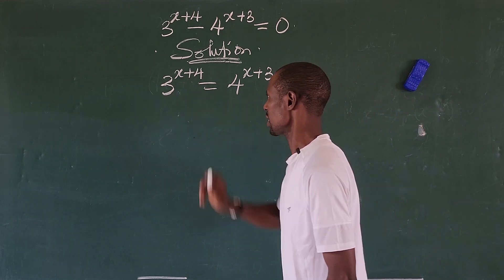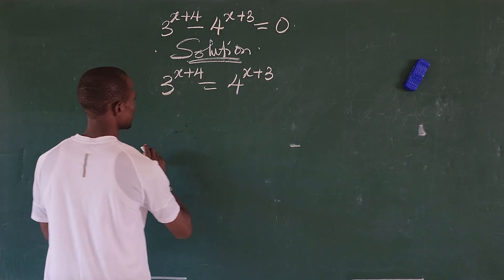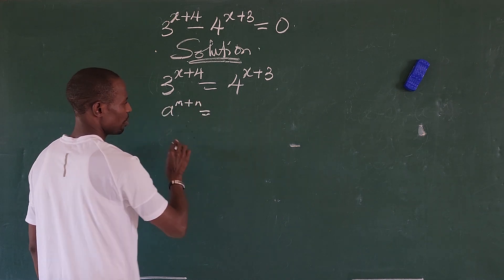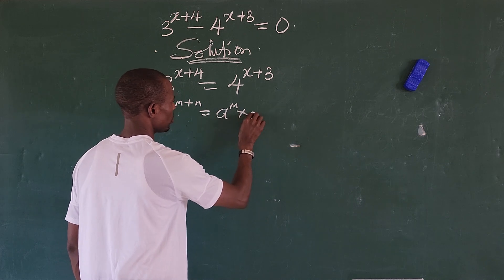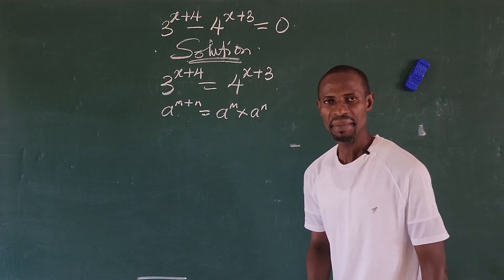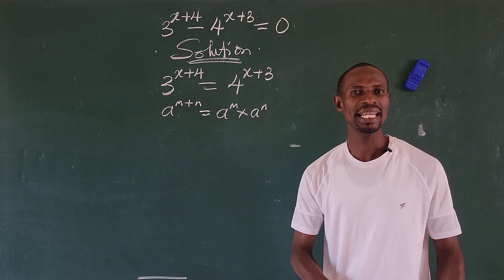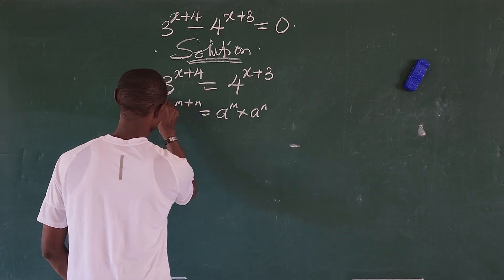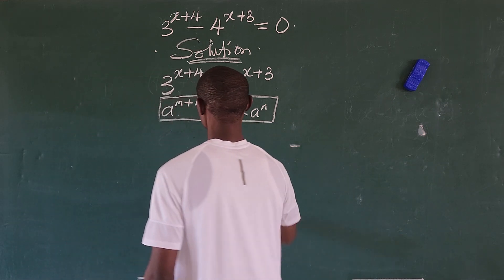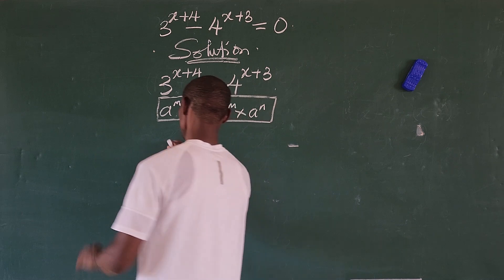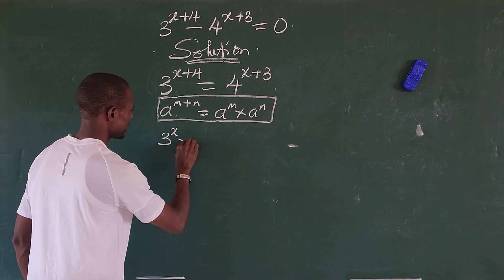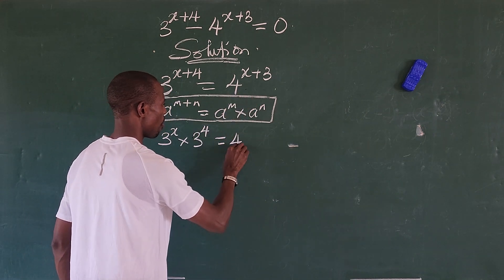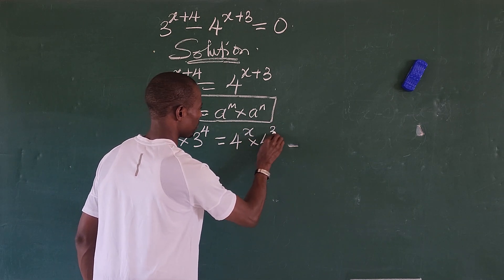The next thing we do is look at this expression. According to the law of indices, a to the power of m plus n equals a to the power of m times a to the power of n, so long as the bases are the same. Applying this rule, we rewrite both sides to get 3 to the power of x times 3 to the power of 4, equal to 4 to the power of x times 4 to the power of 3.